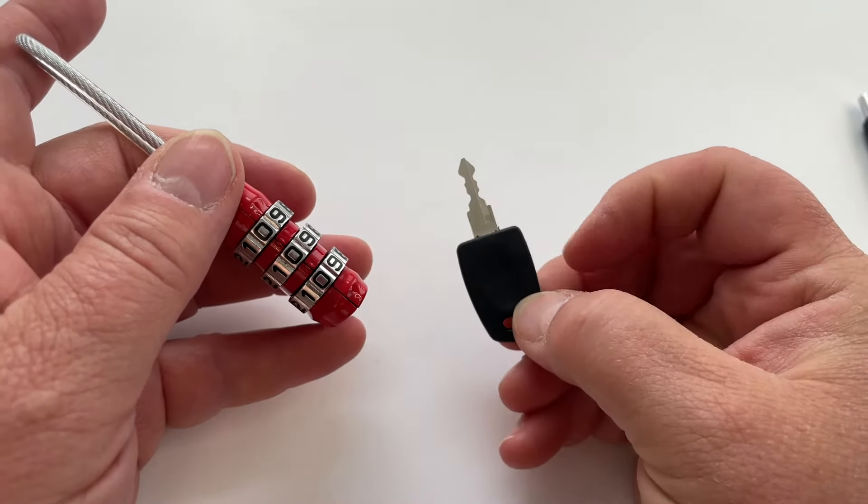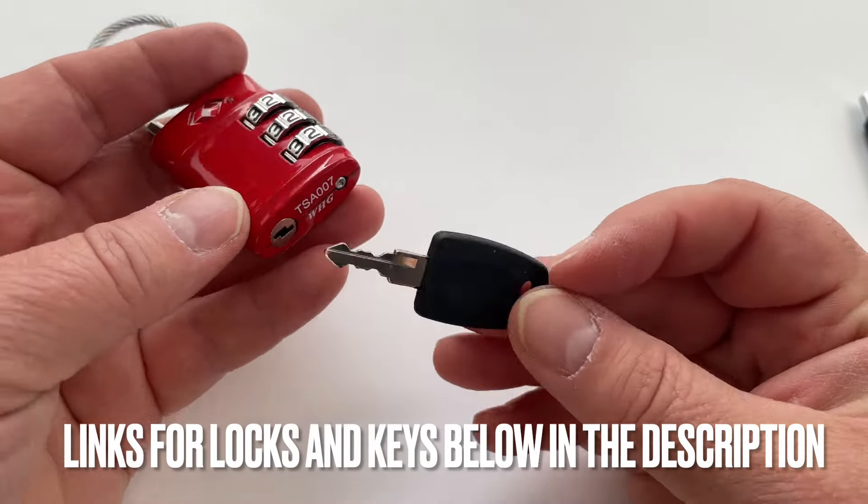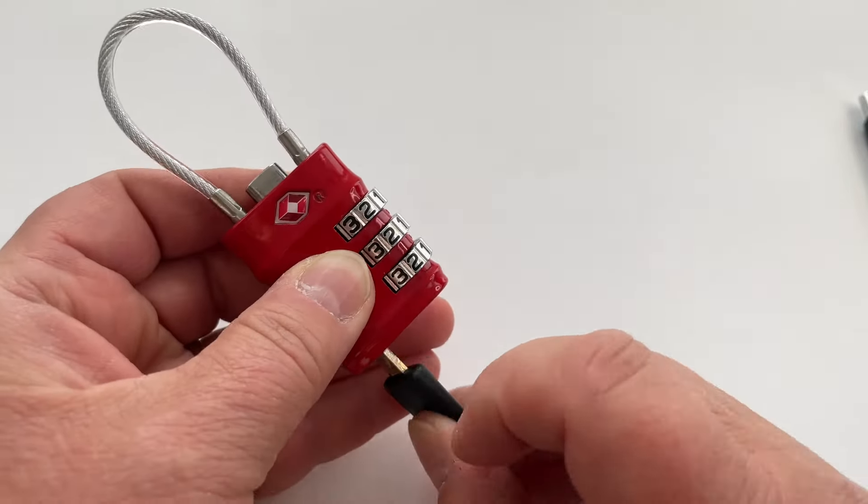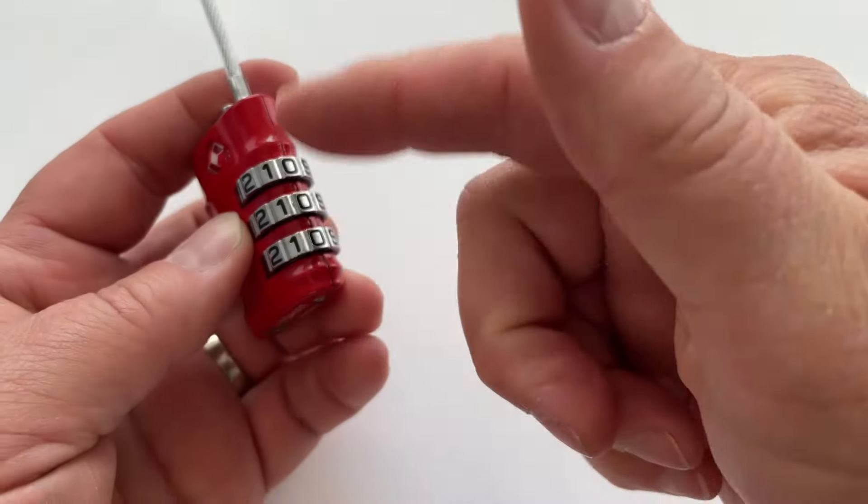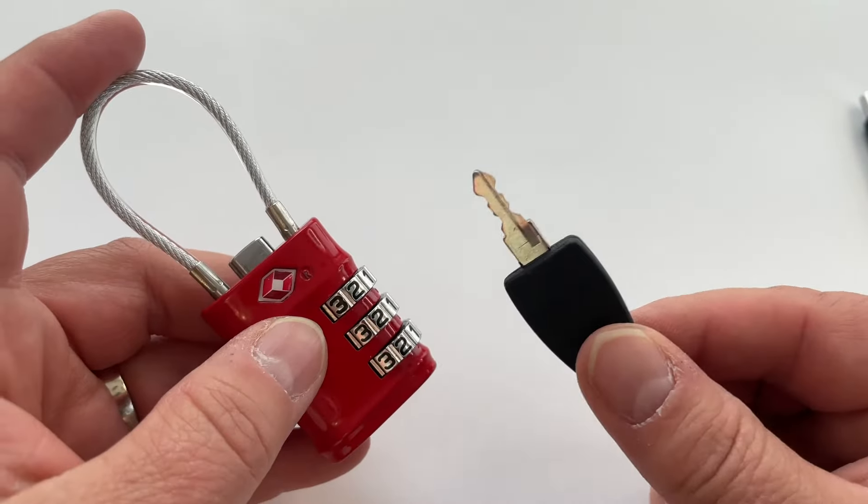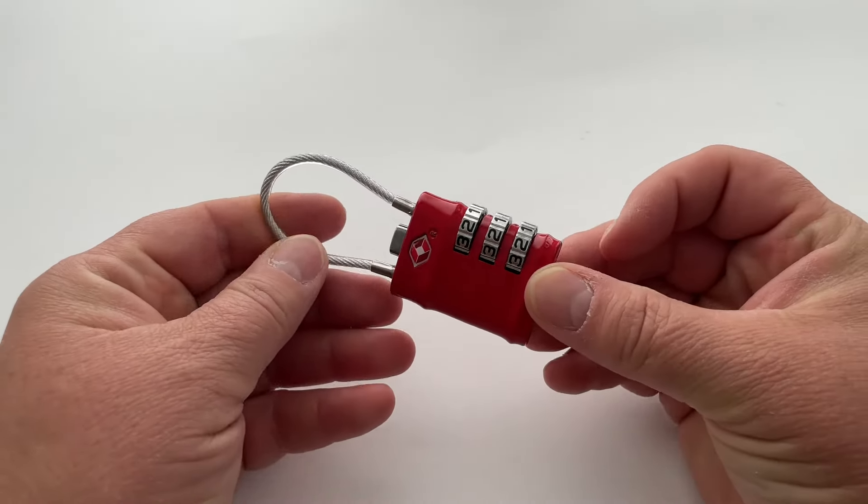The other thing you can do is order a key from Amazon. This is the 007 TSA approved key, and it does open the lock, but it doesn't solve your problem of not knowing the combination. I'll post links to these locks and keys in the description below for you to check out.